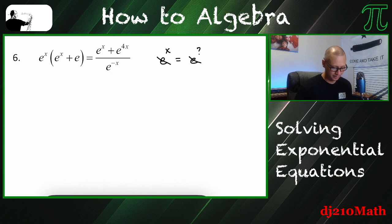So what I want to do is get this down to e to something is equal to e to something else. If I can get it to like e to the x is equal to e to some number, then the e's will cancel. That's what I want to do. So we got a ways to go.